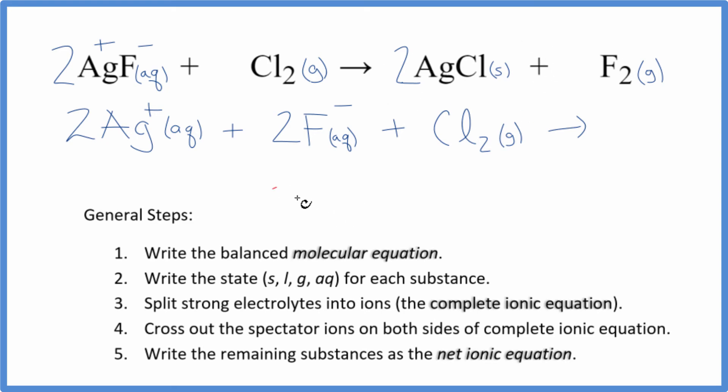For the products, we're not gonna split the solid up. Two AgCl, silver chloride, solid, plus our F2 gas. We don't split gases up. So there we have it. This is the complete ionic equation here.